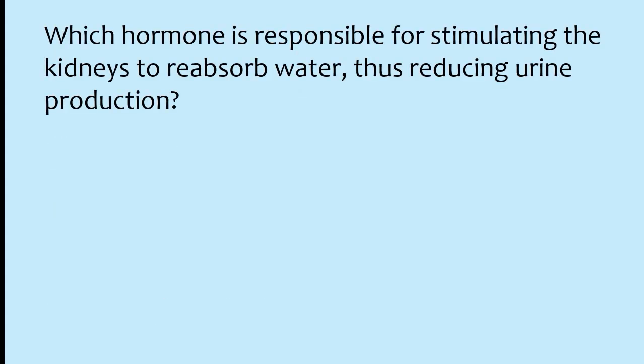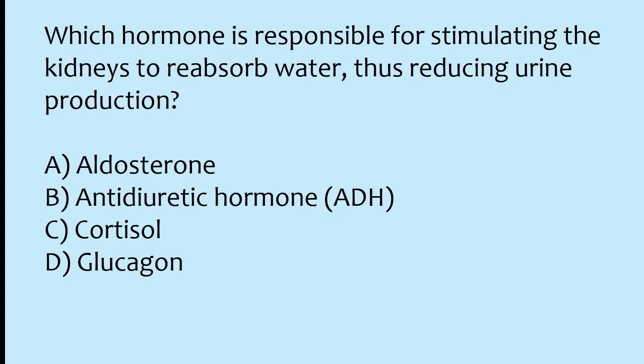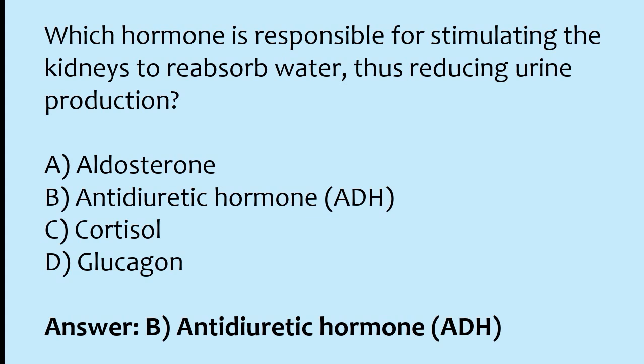Which hormone is responsible for stimulating the kidneys to absorb water, thus reducing urine production? Options: aldosterone, anti-diuretic hormone (ADH), cortisol, glucagon. The correct answer is option B: anti-diuretic hormone (ADH) is responsible for stimulating the kidneys to reabsorb water, thus reducing urine production.